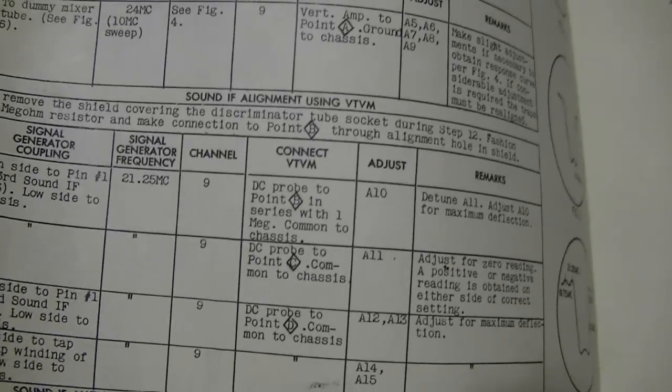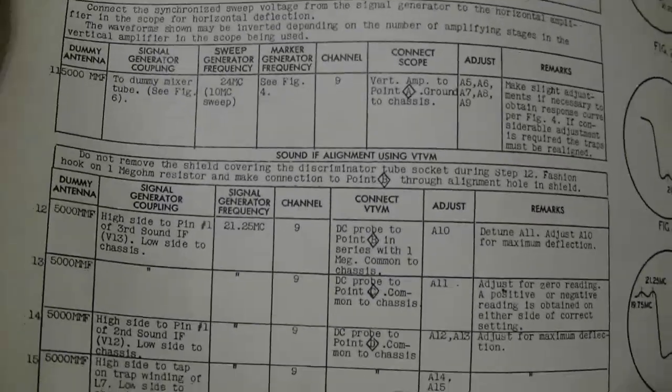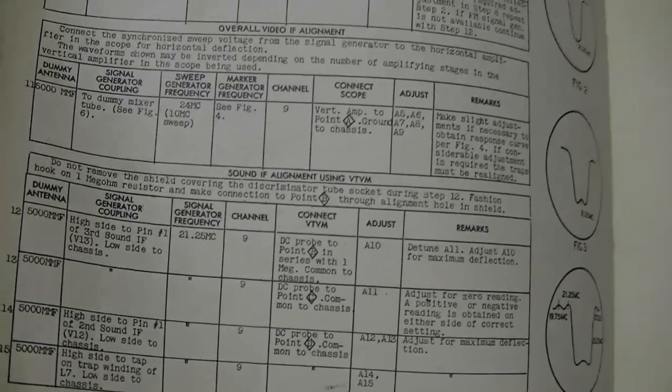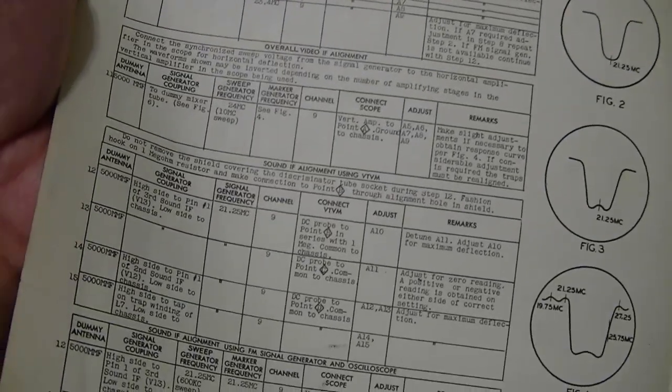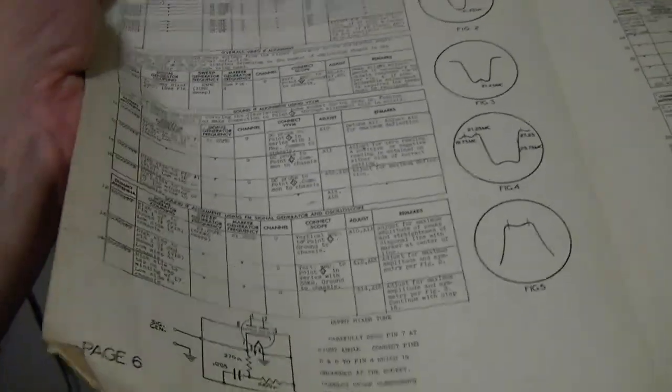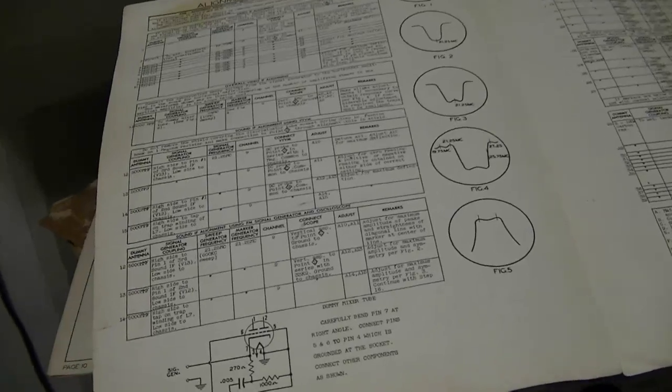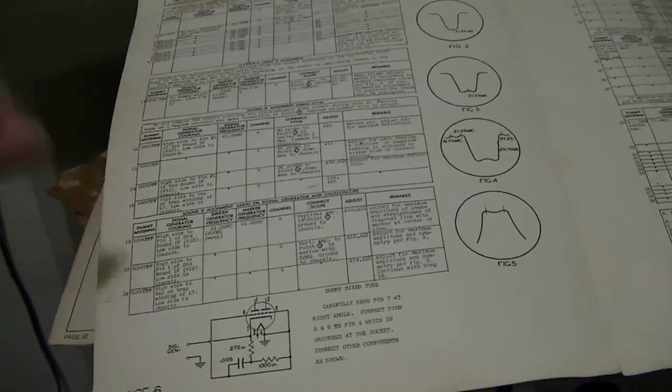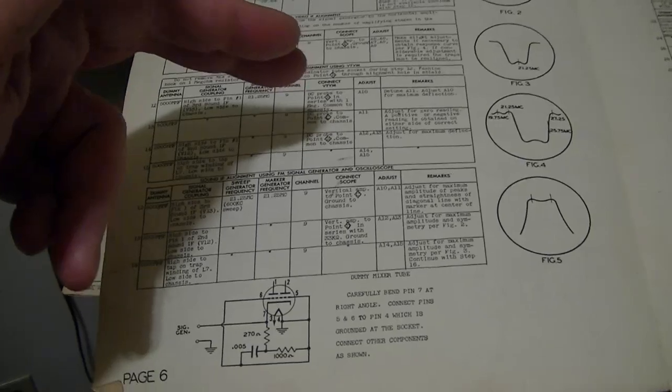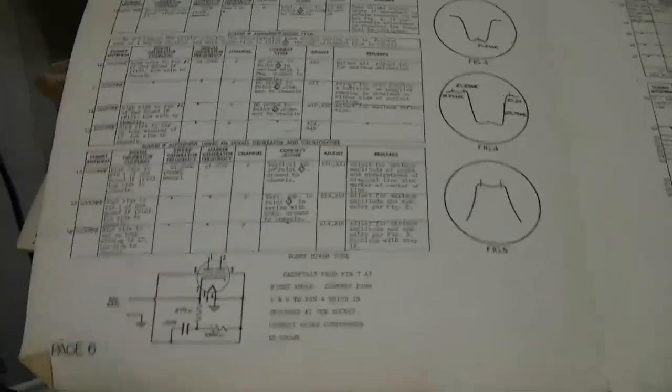Some of them are even more of a pain than that because, for example, this first one, point B. Point B is inside of a shielded area. They have a note here: don't remove the shield. Instead, attach a 1-meg resistor and feed it through a hole and then you can inject your signal. So I had to remove the shield, attach a resistor, reinstall the shield, feed my signal in, tweak that one coil, and then remove the shield again, remove the resistor, reattach the shield, and then move on to the next step.